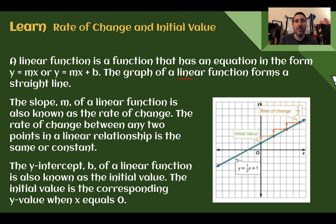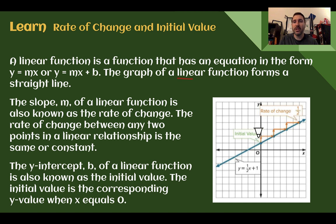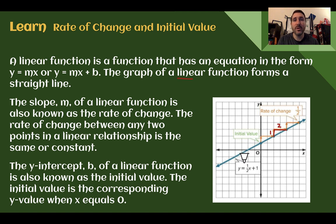The slope, m, of a linear function is also known as the rate of change. The rate of change between any two points in a linear relationship is the same, or constant. So if we look anywhere on this line, our rate of change is 1/2 — we have a ratio from our rise to our run of 1 over 2. No matter where we look, it's the same. We saw this a lot in Module 4.